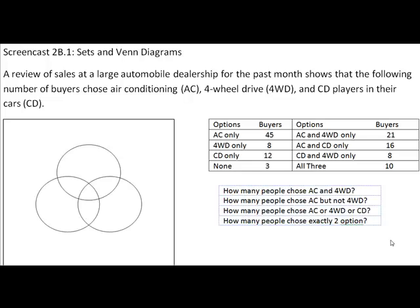The first question asked us to create a Venn diagram based on this data so that we can answer the four questions that you see in the lower right-hand corner of your screen. So we are going to do exactly that. The first step will be to label the circles within our Venn diagram, and you can see that I have that all set for us to go here.